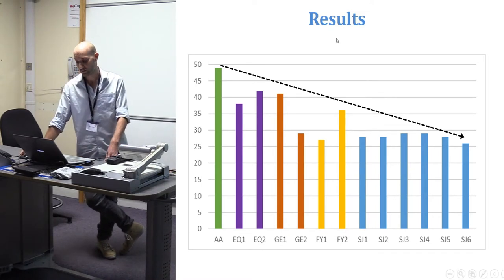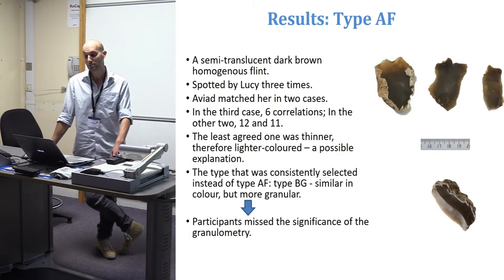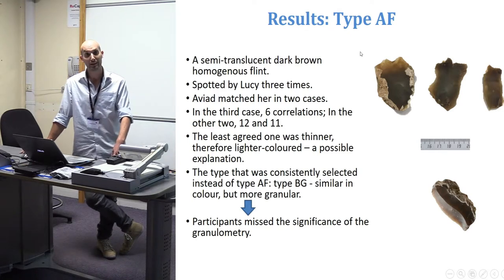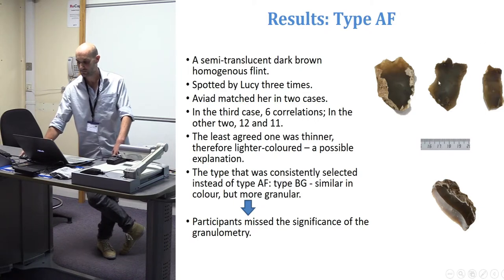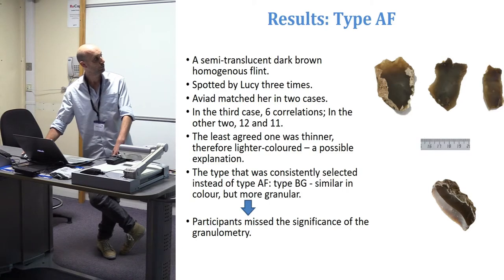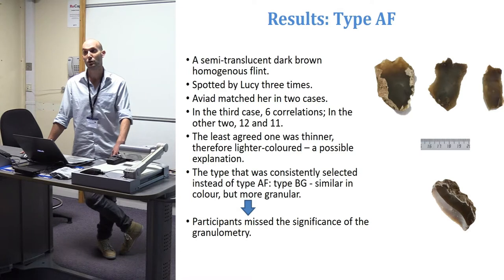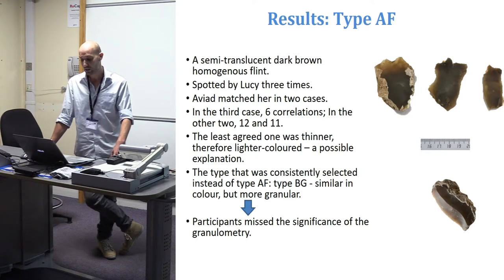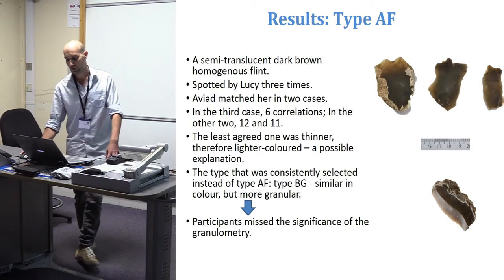Zooming into four examples: Type AF is a semi-translucent, dark brown, homogenous flint. Lucy spotted it three times. I matched her in two cases. In the third case, there were only six correlations with other participants, compared to 12 and 11 in the other two cases. The least-agreed piece was thinner and therefore lighter in color, which may explain the inconsistency. The type most commonly selected instead of Type AF was Type BG — also dark brown, but more granular with larger grains — suggesting participants missed the significance of granulometry in their classification.